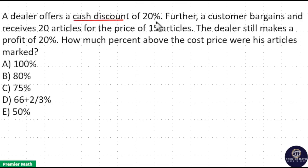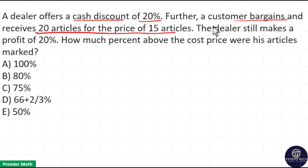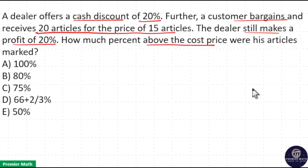A dealer offers a cash discount of 20 percentage. Further, a customer bargains and receives 20 articles for the price of 15 articles. The dealer still makes a profit of 20 percentage. How much percentage above the cost price is the marked price? There are two discounts to consider.